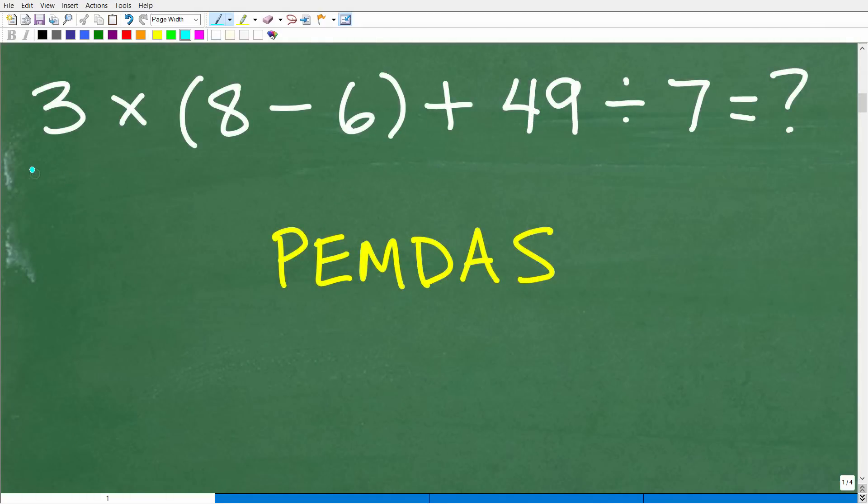Okay, so here is our problem. And if we do a quick scan of the problem, we have multiplication, subtraction, addition, and division. Now, these things here are called mathematical operations. And I'm going to assume, because we're doing this problem without a calculator, that you understand how to multiply, subtract, add, and divide basic numbers. So the secret to getting this problem correct is the right order we do it in, okay?